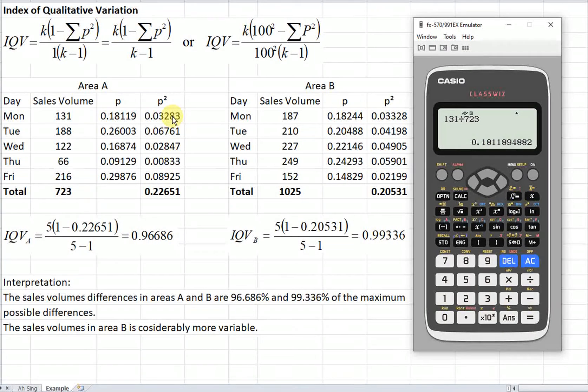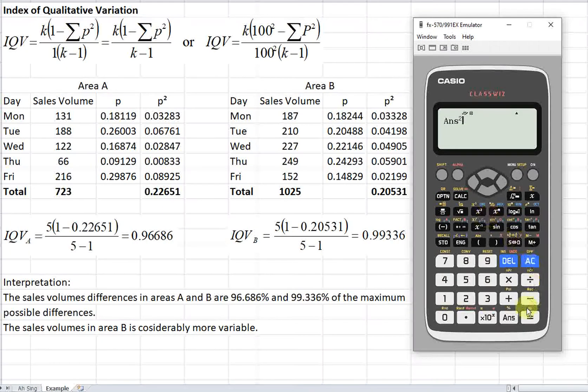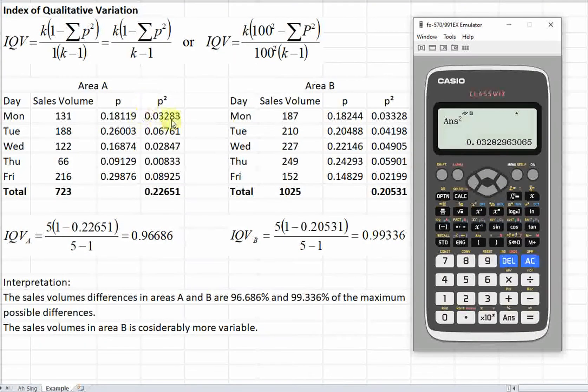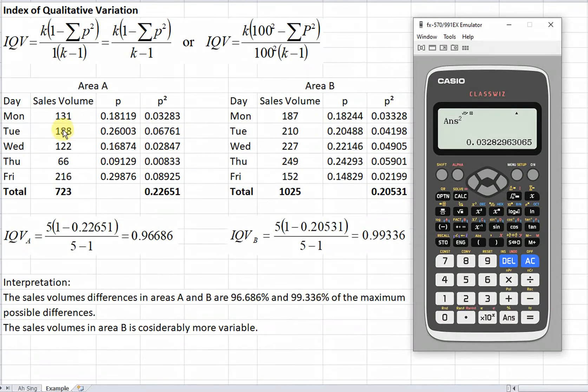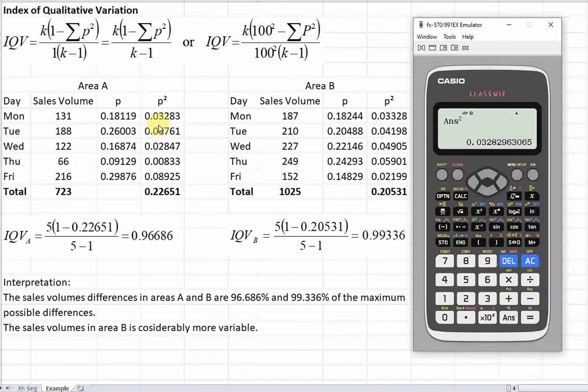Then we obtain 0.1811 and so on. What we have to do is square it. So we square and we get the square proportion.